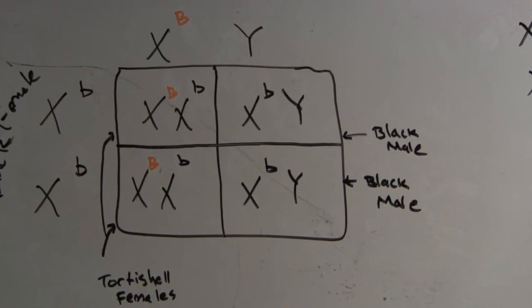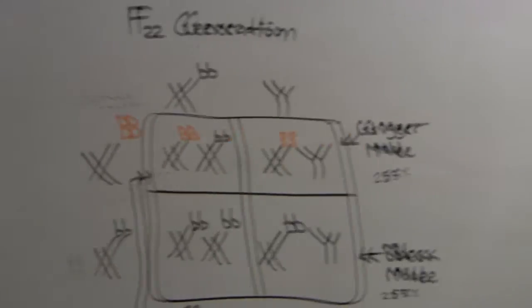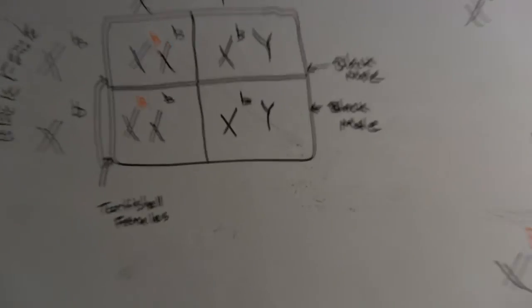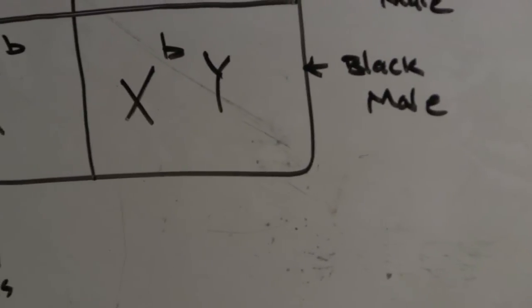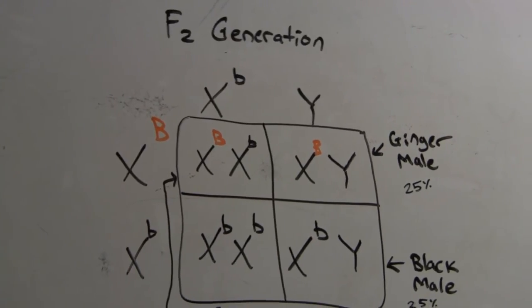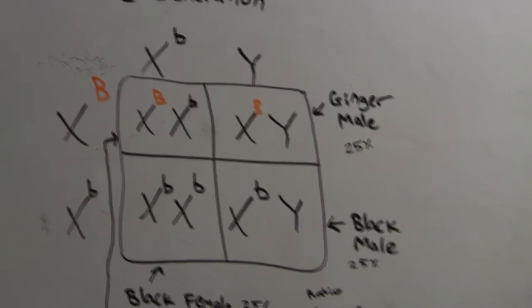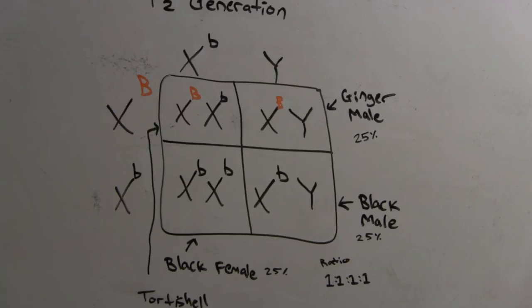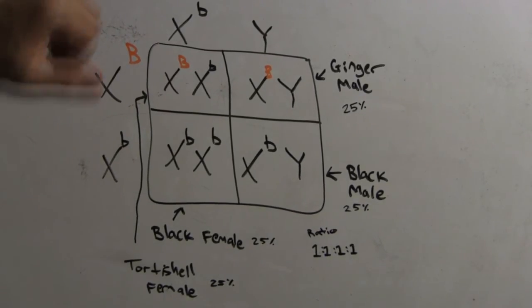Now, if we move down to the F2 generation, essentially what you're doing is you're taking this male and that female and you make them mate. It's not necessarily the brother and sister that are mating, but if you come across these two genetics in nature, this is what's going to occur.